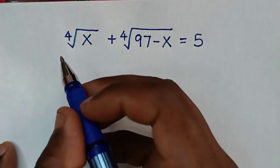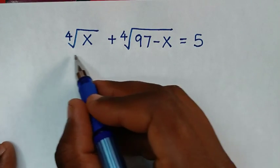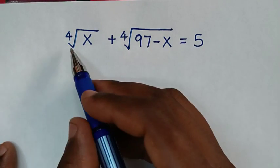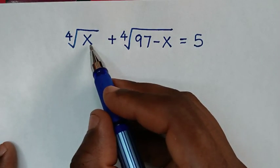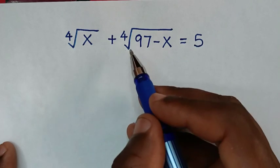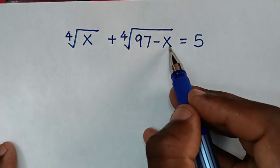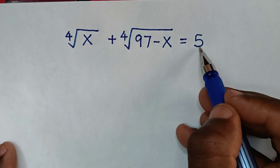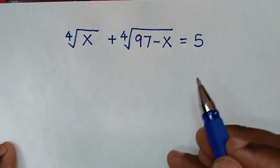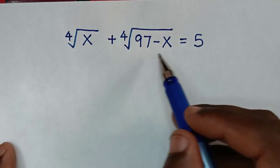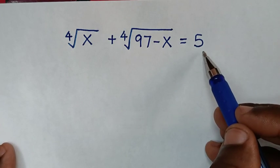Hello, you are welcome to solve this math problem, which is the 4th root of x plus the 4th root of 97 minus x is equal to 5. We need to find the values of x from this equation.